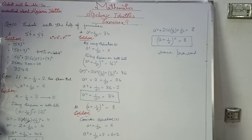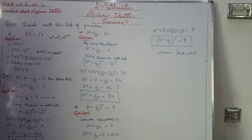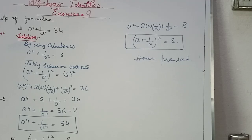Then we move to the second part. What we have to prove is that a⁴ + 1/a⁴ = 34. We will use the result from the first part further for the second and third parts.